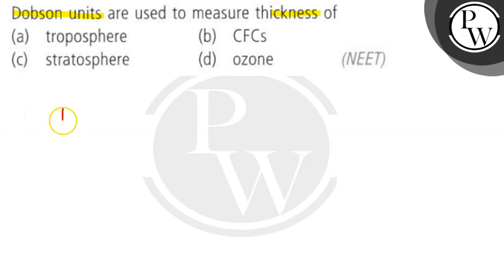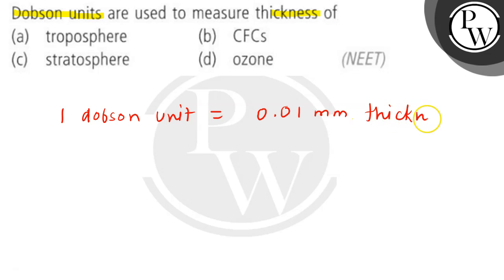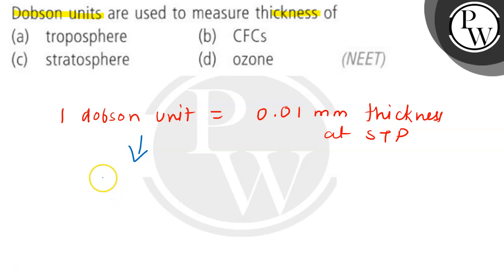We know that one Dobson unit is equal to 0.01 mm thickness at STP. So we use this Dobson unit to measure the ozone layer.